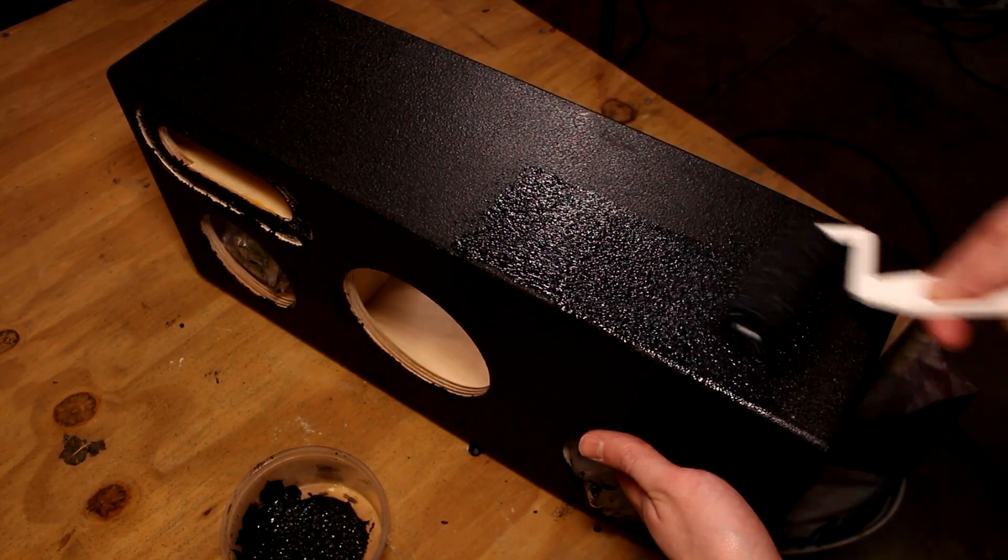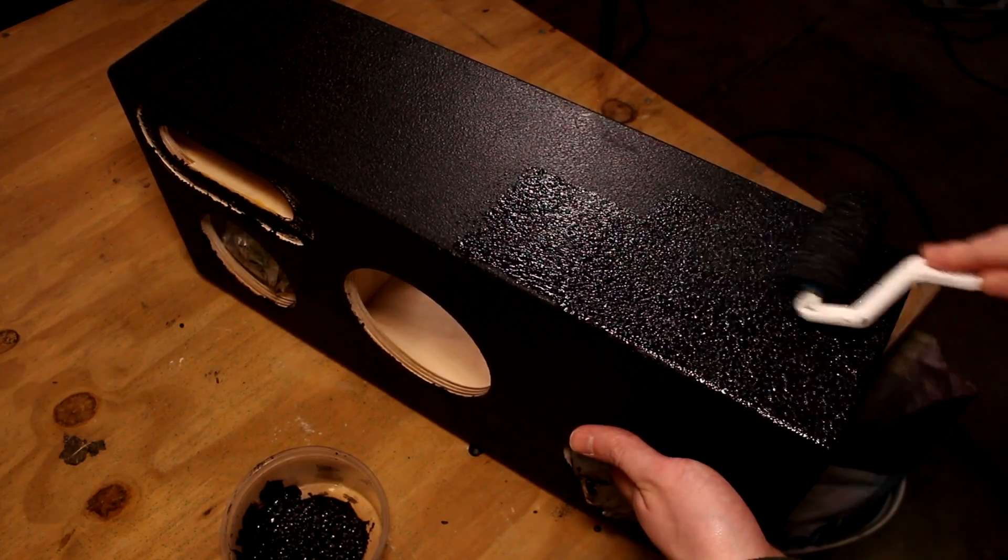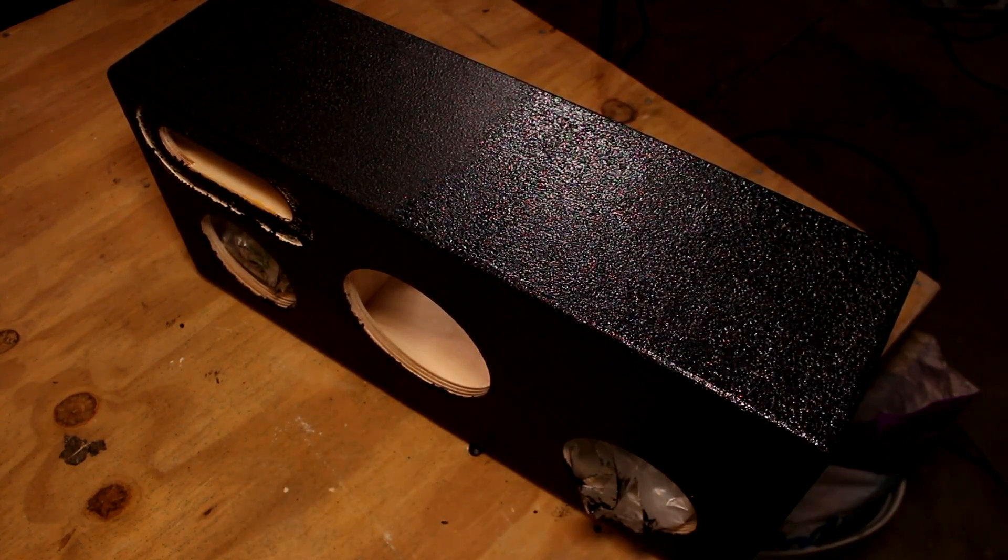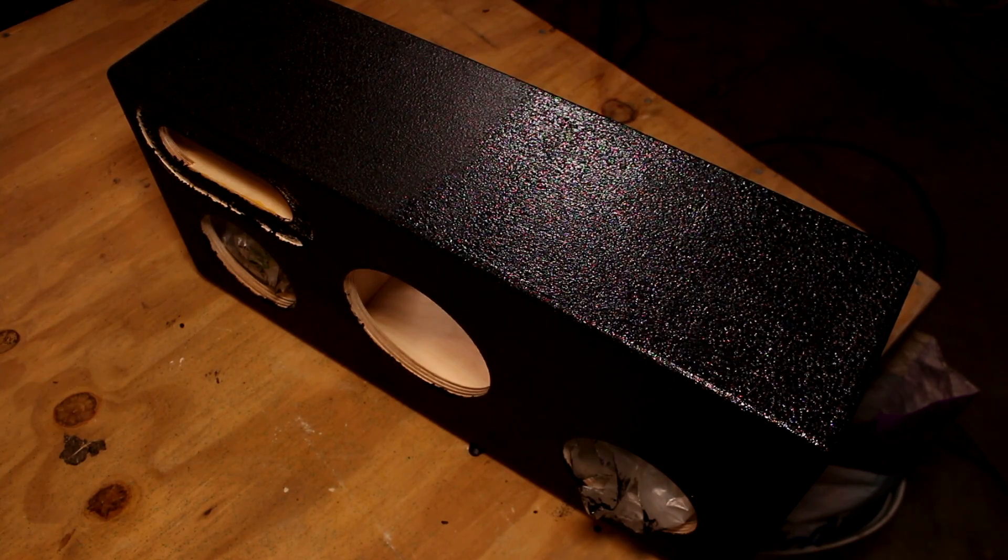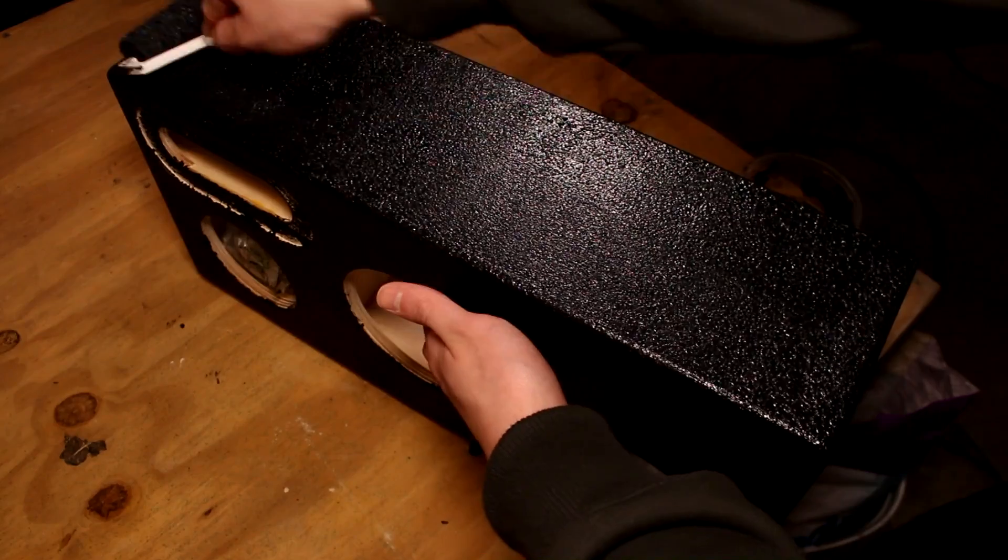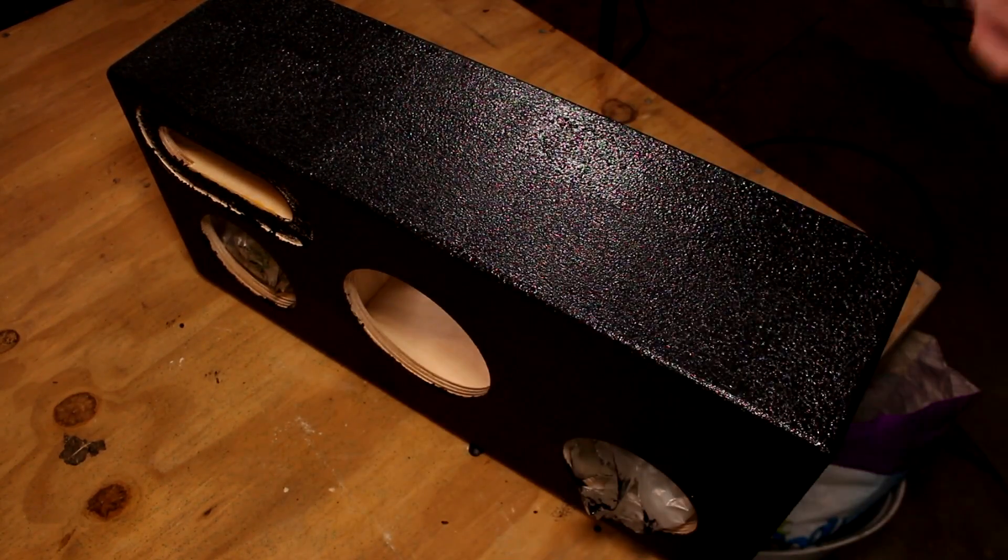Then I sanded everything smooth with 200-grit sandpaper and started rolling on Duratex, which is a durable speaker cabinet coating that's absolutely perfect for this build. They tell you to do two coats, which is exactly what I did, and I gave each coat overnight to dry.